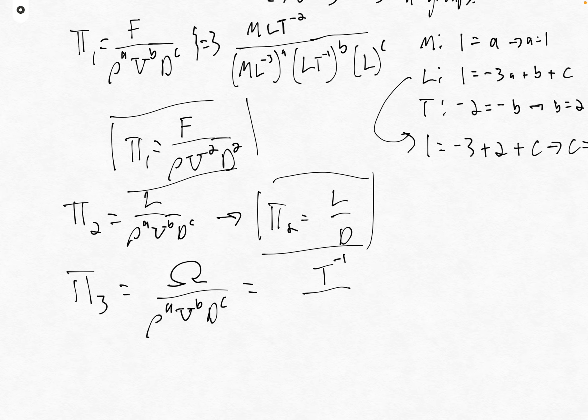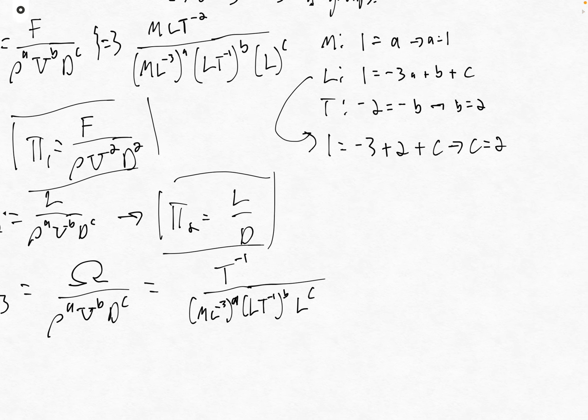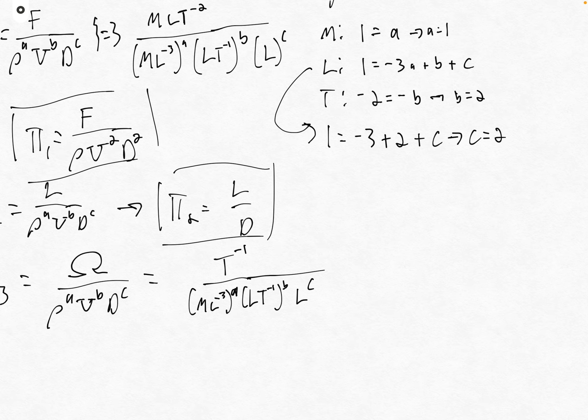Omega has dimensions of T to the minus one. This is T to the minus one over ML to the minus three a times LT to the minus one to the b times L to the c. We get similar equations to before. For M: zero equals a. For L: zero equals minus three a plus b plus c. For T: minus one equals minus b.